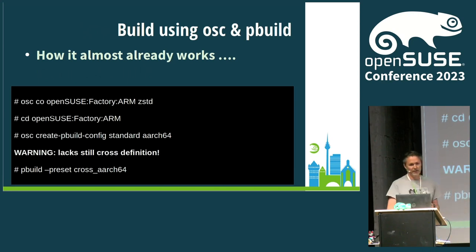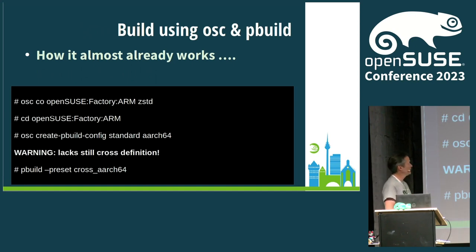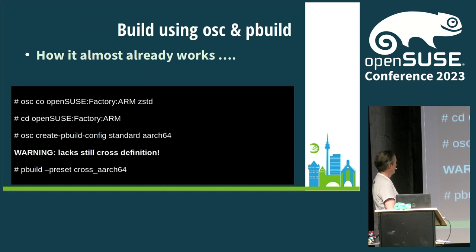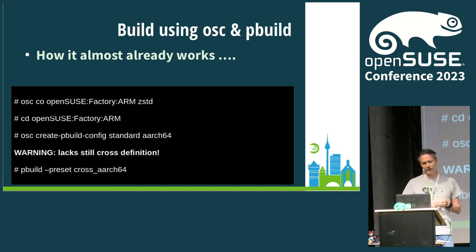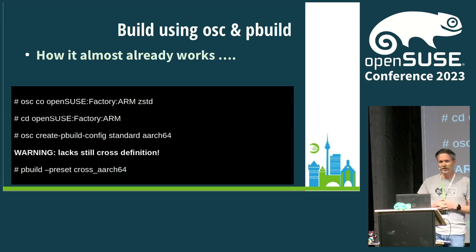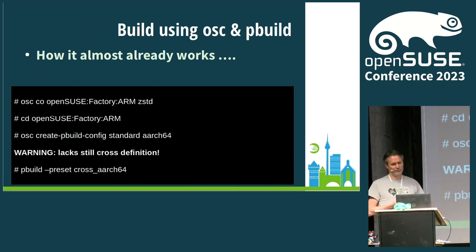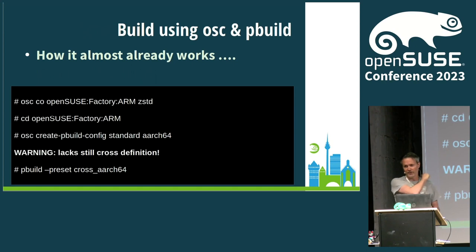You can also use pbuild without git by checking out packages directly from Factory with osc. The command 'create_pbuild_config' in the latest osc versions creates the _people file that pbuild requires. What's not there yet is that our projects don't define the cross build config in the project config yet — I hope we get this merged at some point — but I'll show you later how to manually add it easily for now.